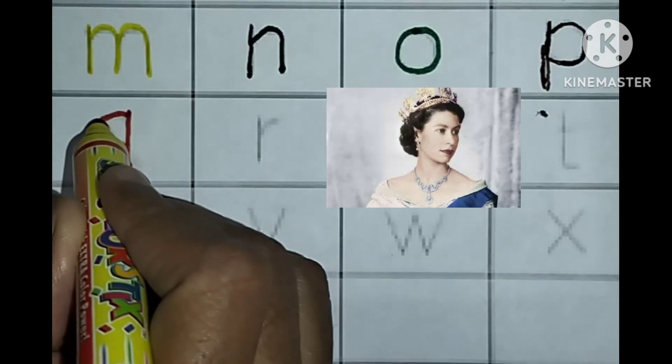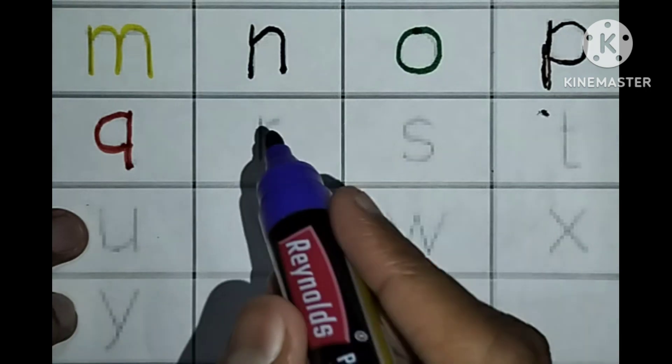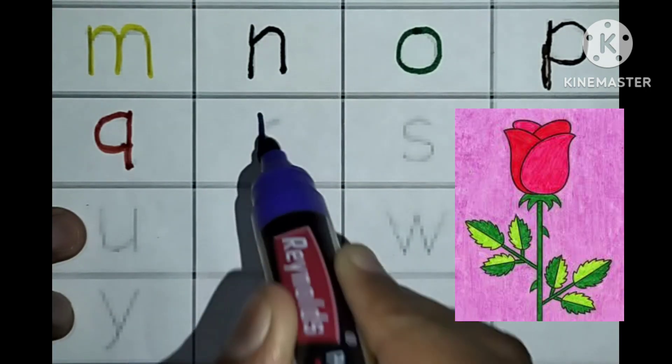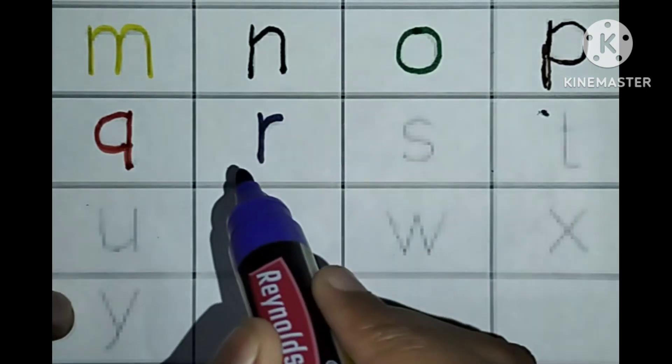Q. Q for queen. R. R for rose, R for rose.